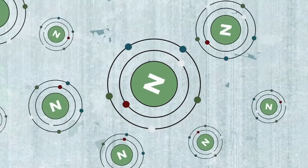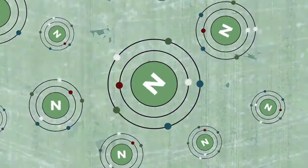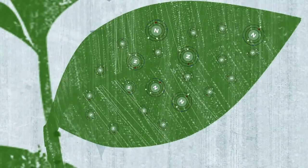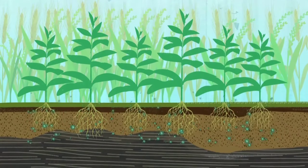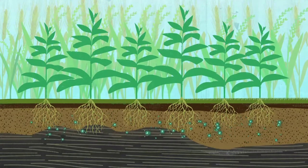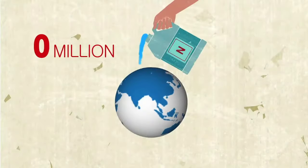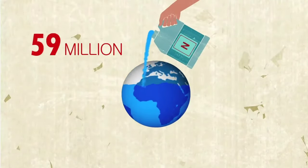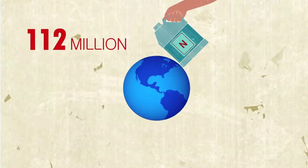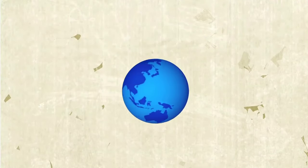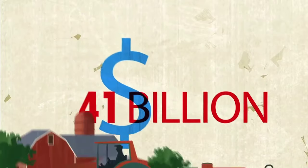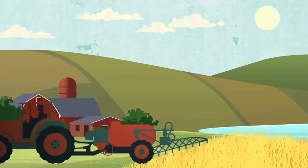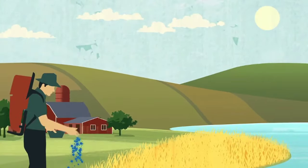Nitrogen is crucial to all forms of life. It's an essential plant nutrient with a major role in crop productivity, yet nitrogen is often unavailable in soils for crops. As a result, the world's farmers apply up to 112 million tons of nitrogen fertilizers each year — fertilizers with an estimated cost of 41 billion US dollars.